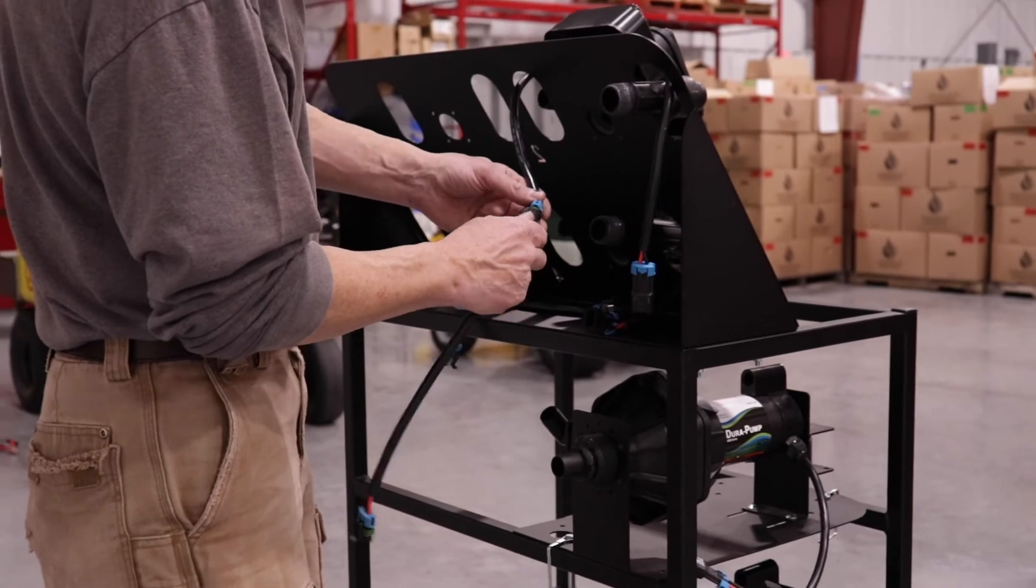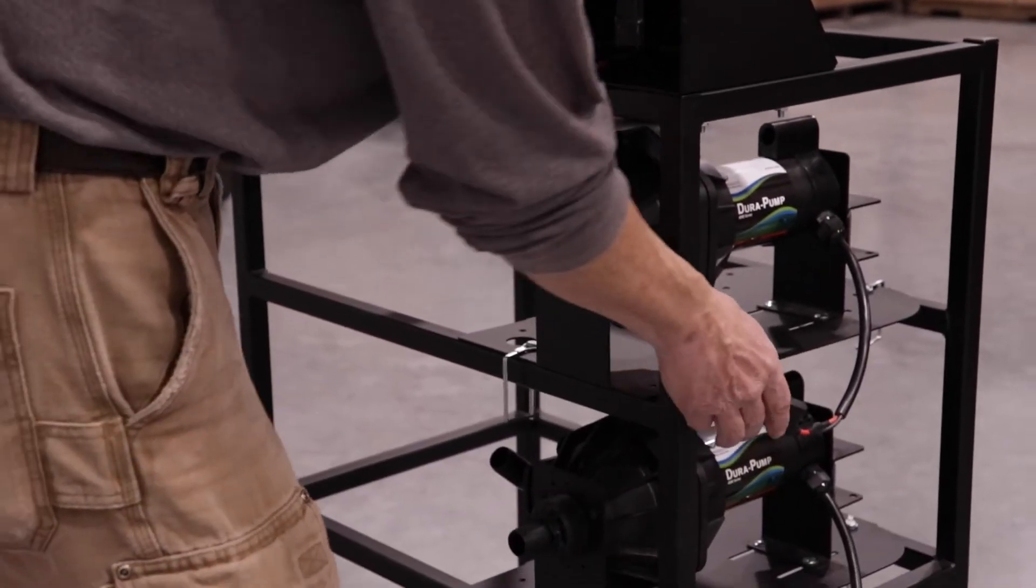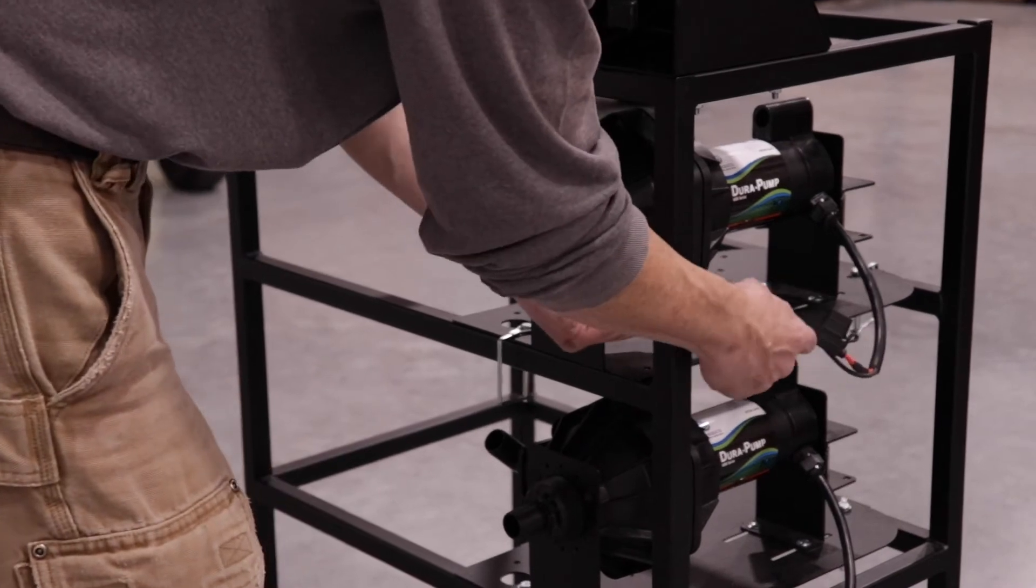Plug in the short extension cord on the inlet side of the meter and then connect the extension cord to power supply cord to pump.